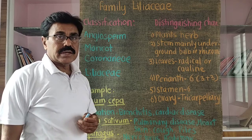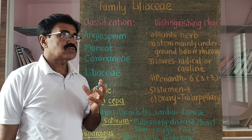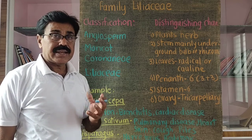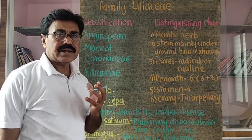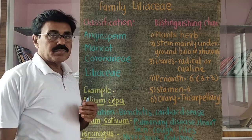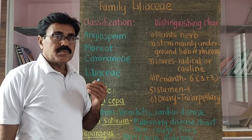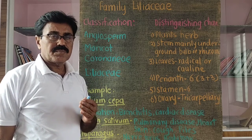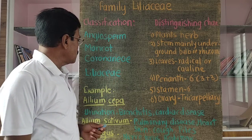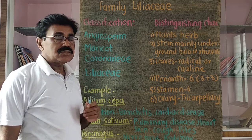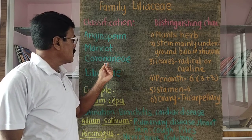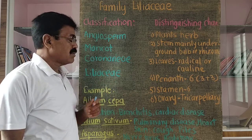The order is Coronarieae. The important character of this order is that there is a colored, bright, attractive perianth — there is no calyx or corolla differentiation. Instead, there is only a perianth. The systematic position is: Division Angiospermae, Class Monocotyledoneae, no subclass, Series Coronarieae, and Family Liliaceae.